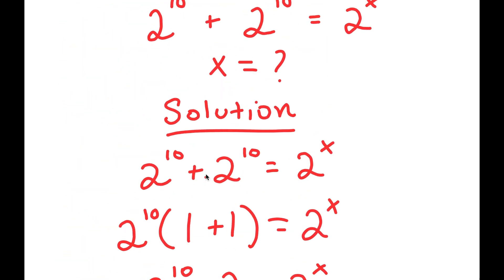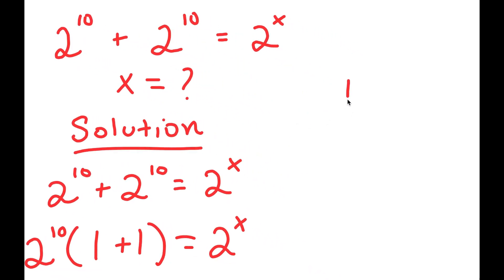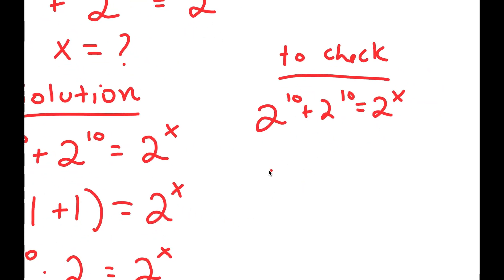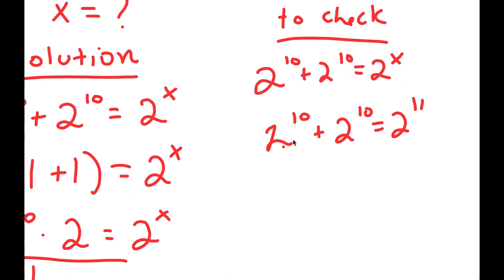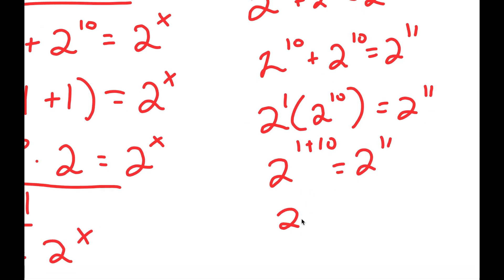Now, the final step that we have to do — and we always have to do this in every equation — is to check our answer. Our equation was 2 to the power of 10 plus 2 to the power of 10 is equal to 2 to the power of x. We got x equals 11. So 2 to the power of 10 plus 2 to the power of 10 is equal to 2 to the power of 11. That is the same as 2 times 2 to the power of 10, and 2 to the power of 1 times 2 to the power of 10 equals 2 to the power of 1 plus 10, which is 2 to the power of 11. ✓